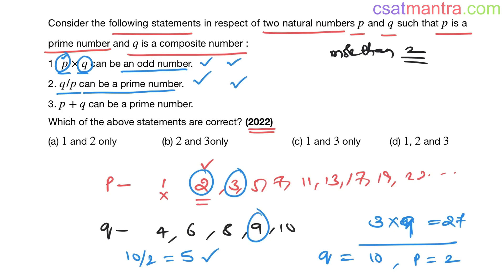Now p plus q can be a prime number. You take p as 3 plus q as 4, that equals 7. 7 is a prime number, so this is also a possibility. Again, p and q need not be same as we took in statement one and statement two. In every statement our p and q should satisfy these conditions: p should be prime number, q should be composite number. They need not be same.